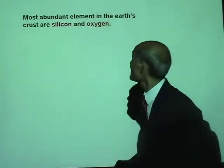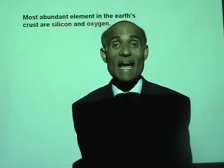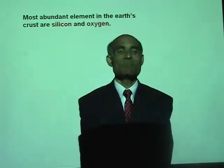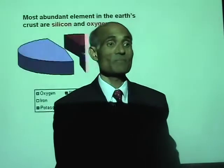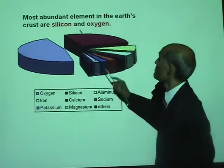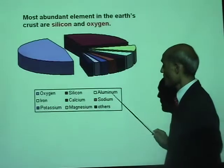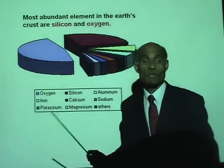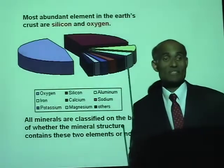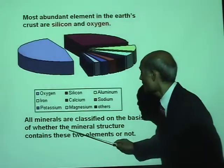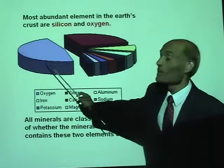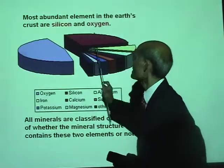The most abundant elements on the Earth's crust are silicon and oxygen. Most of the Earth's crust is made up of oxygen and silicon, along with other elements like aluminum, iron, calcium, and sodium. All minerals are classified on the basis of whether the mineral structure contains these two elements — oxygen and silicon — the two most dominant elements. So we are going to classify all minerals into two groups: those that contain oxygen and silicon, and those that do not.